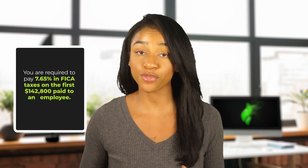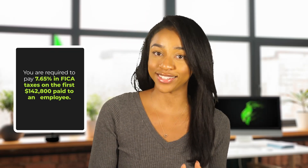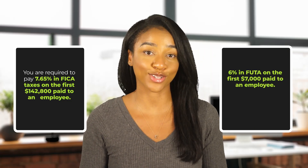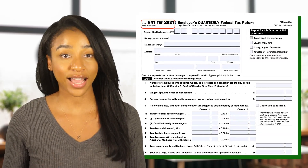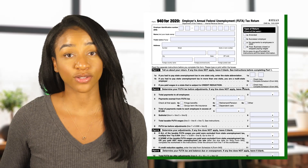Now let's get into the tax implications of hiring an employee versus a contractor — this is the part the IRS cares about. When you hire an employee, the employer is responsible for filing and paying Social Security, Medicare, and unemployment taxes — known as FICA and FUTA. As an employer, you are required to pay 7.65% in FICA taxes on the first $142,800 paid to an employee, and 6% in FUTA taxes on the first $7,000 paid to an employee. These taxes must be paid at least quarterly and reported on Federal Form 941, and there is also an annual Form 940 that must be filed.